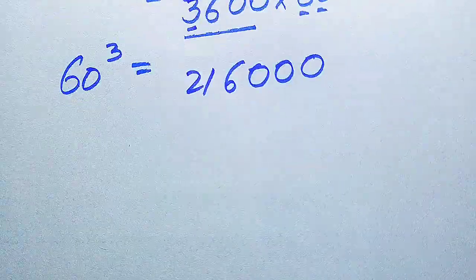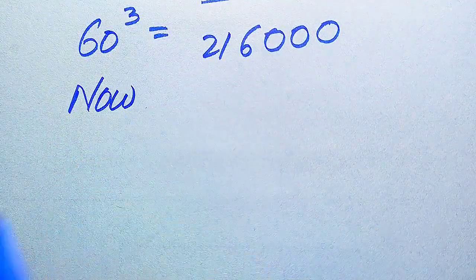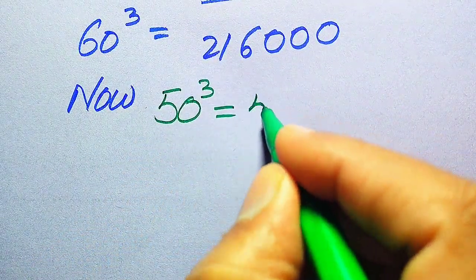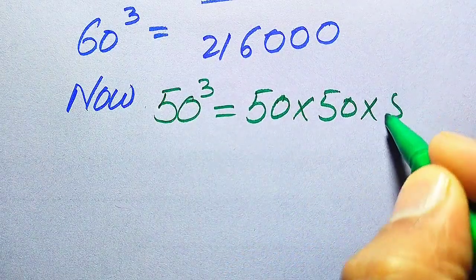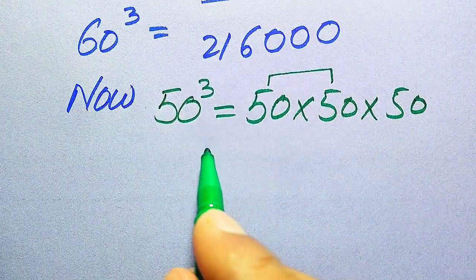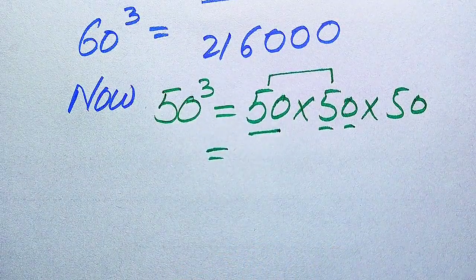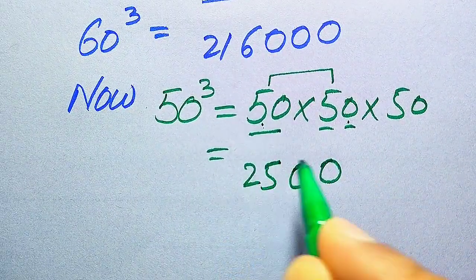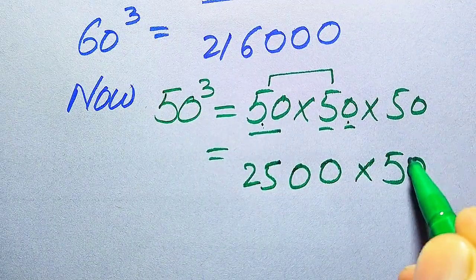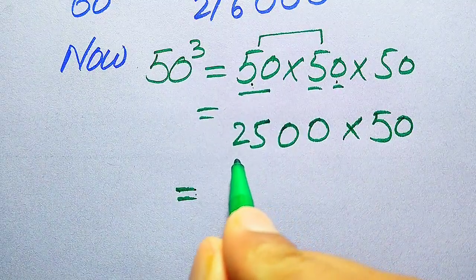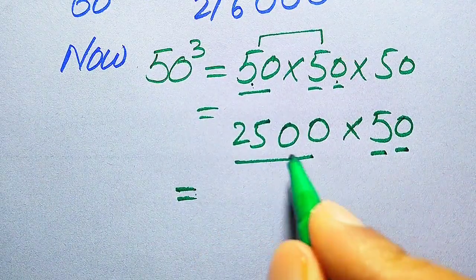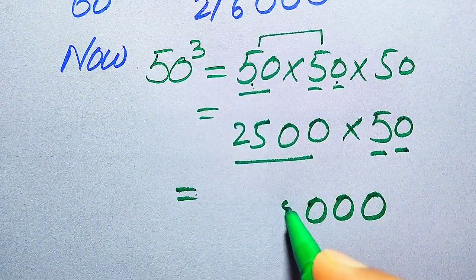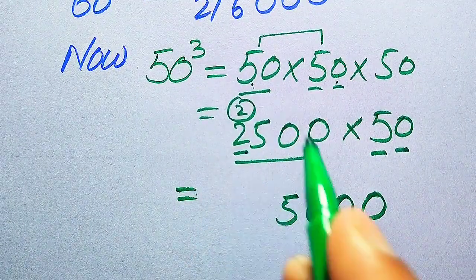Now we find 50 cubed — 50 cubed means we multiply 50 three times. First, 50 × 50: 0 times 50 is 0, and 5 times 50 gives 5×0=0 and 5×5=25, giving 2500. Then 2500 × 50: 0 times 2500 is 0, and 5 times 2500 gives 5×0=0, 5×0=0, 5×5=25, write 5 carry 2, then 5×2=10 plus 2 is 12. So 50 cubed equals 125,000.